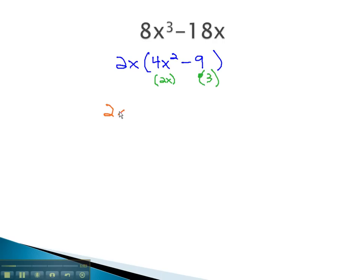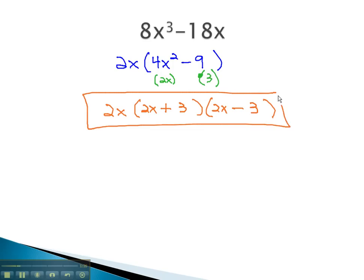Finishing our factoring with the greatest common factor in front, the difference of squares will factor to the sum and difference of the square roots, 2x plus 3 and 2x minus 3. And now our expression is completely factored.